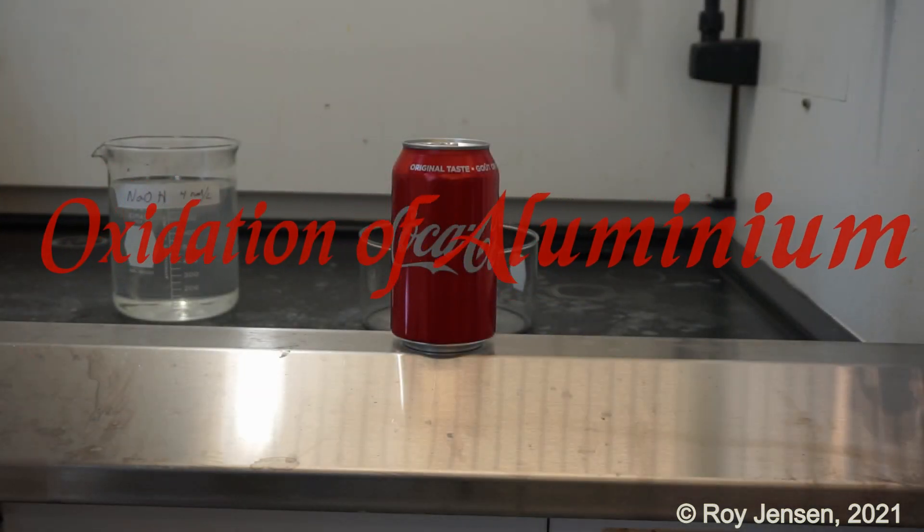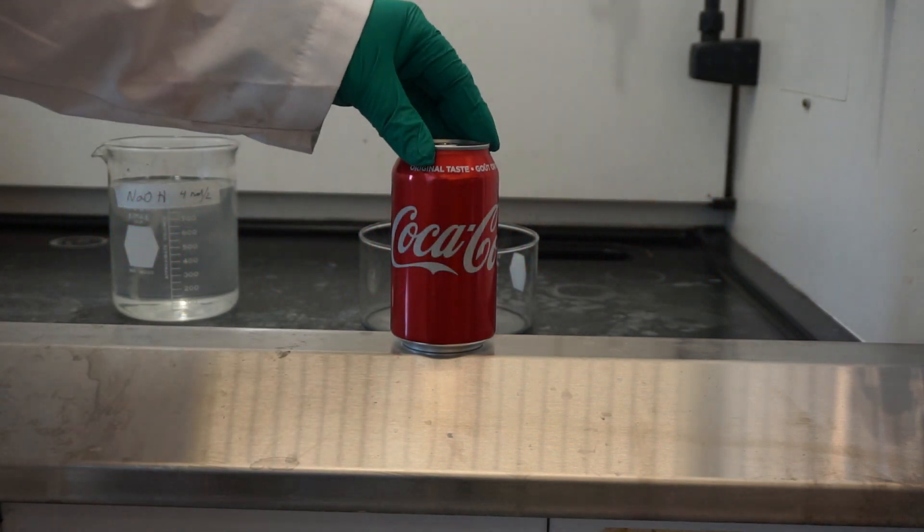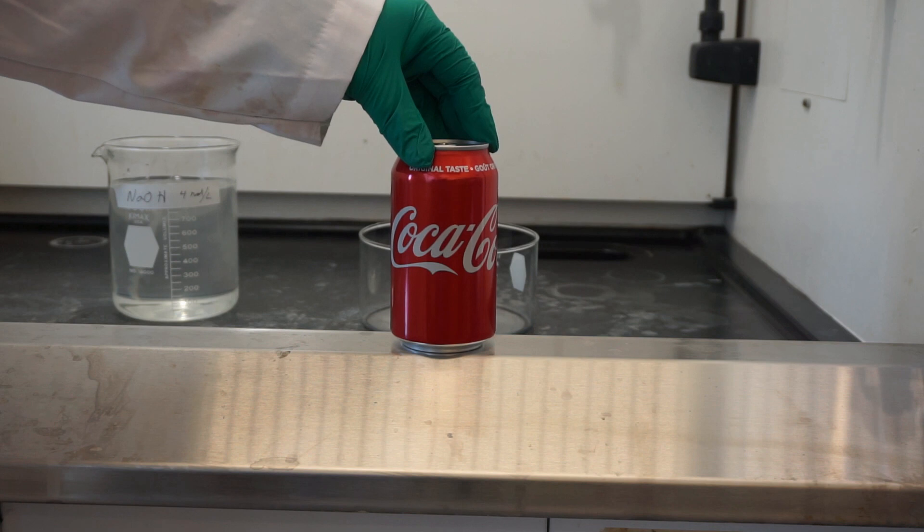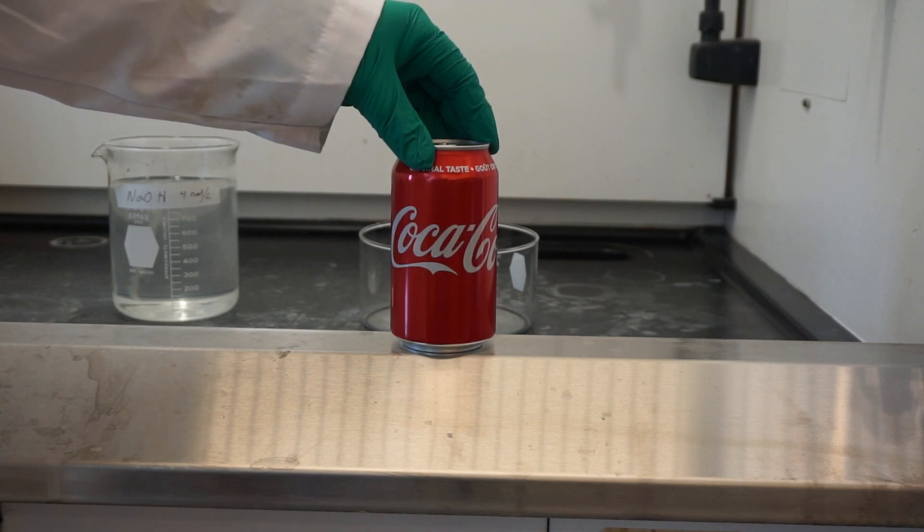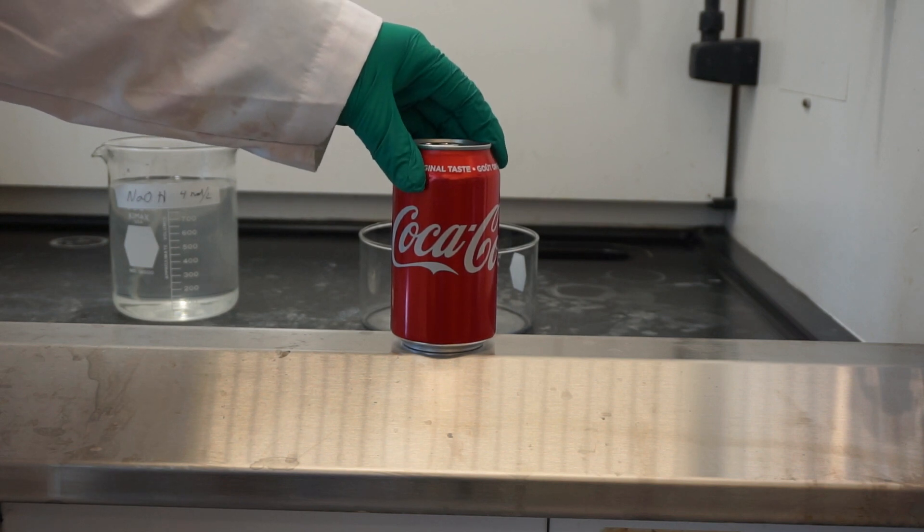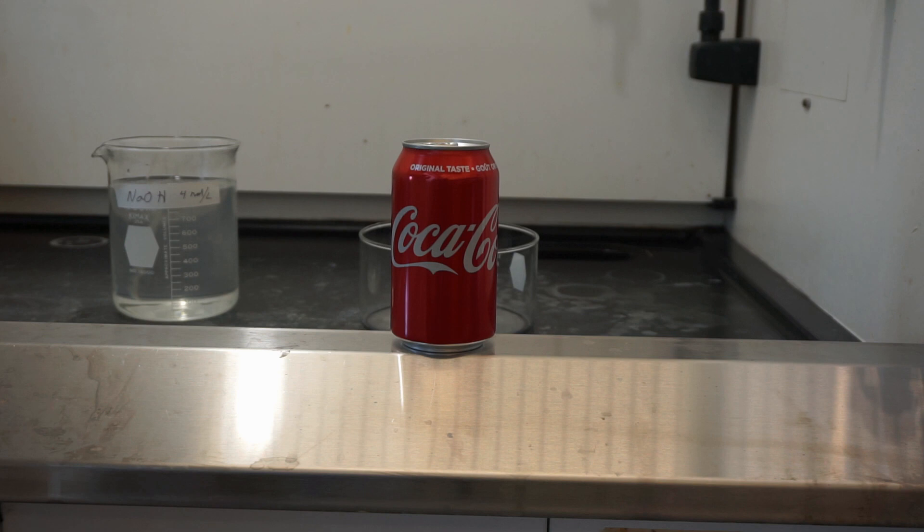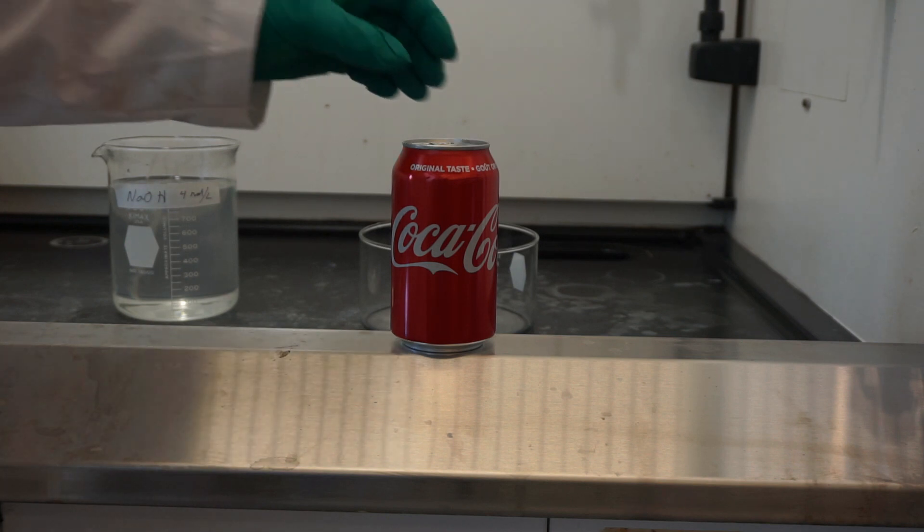I'm going to be talking about the oxidation of aluminum. Soda cans or pop cans, depending on where you live, are made of aluminum. Now aluminum is a lot more reactive than iron, but when iron oxidizes it rusts. The iron oxide flakes off and constantly exposes new fresh iron for further oxidation.